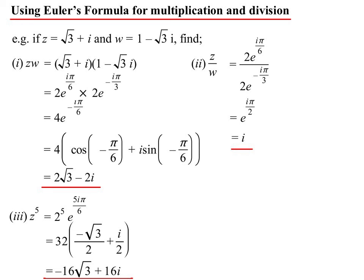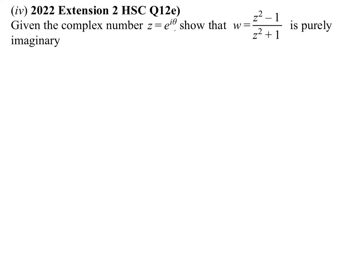Let's have a look at this one from a couple of years ago. We're given the complex number z equals e to the i theta, so our standard one there in exponential form. Show that w, which is z squared minus one on z squared plus one, is a purely imaginary number. So w equals z squared minus one on z squared plus one. If I substitute in, I've got to show this is purely imaginary.